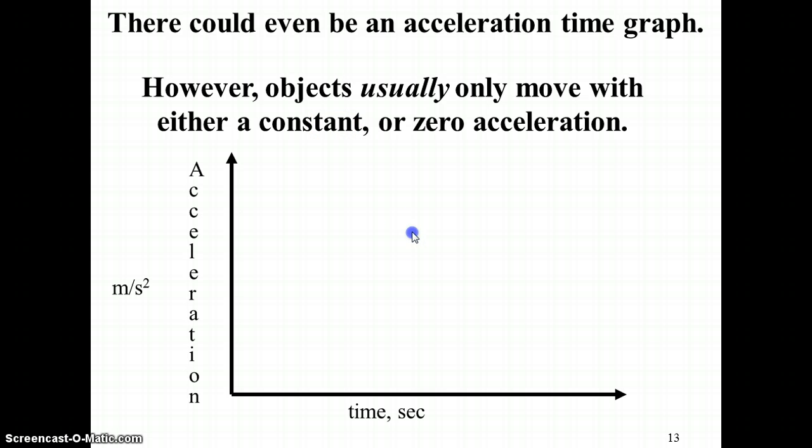You can look at acceleration time graphs, but in this class, we are only going to deal with something that has either zero acceleration or constant acceleration. So it'll either look like this or zero. Specifically, if something was in freefall, this would be at 9.8. That would be the value on the axis. But we could look at other situations where the acceleration might be a different constant value, not 9.8.